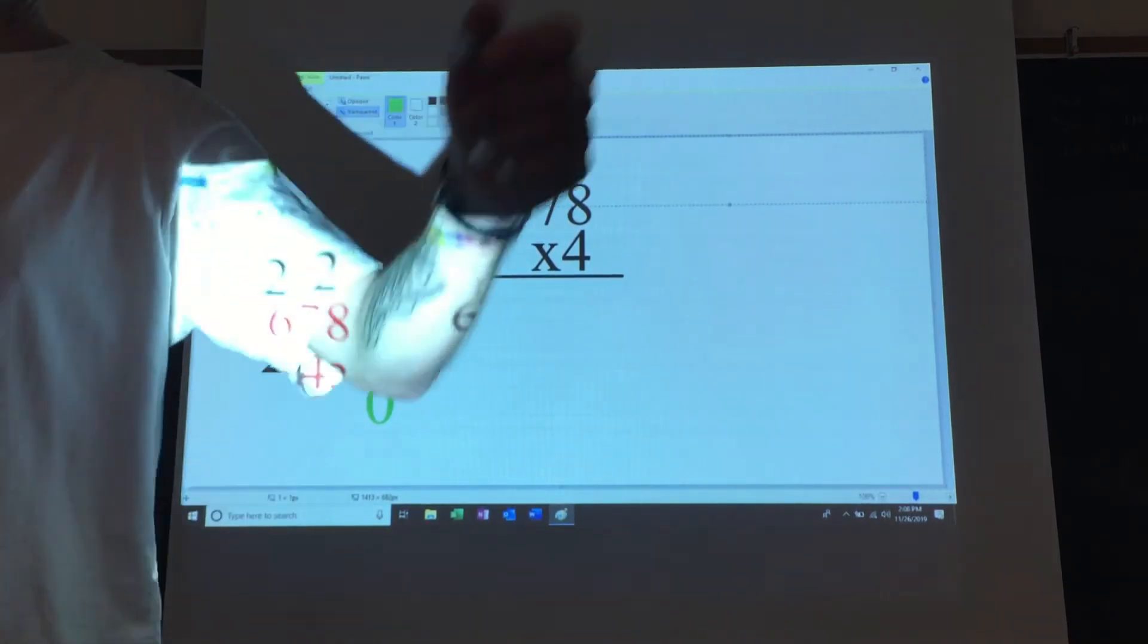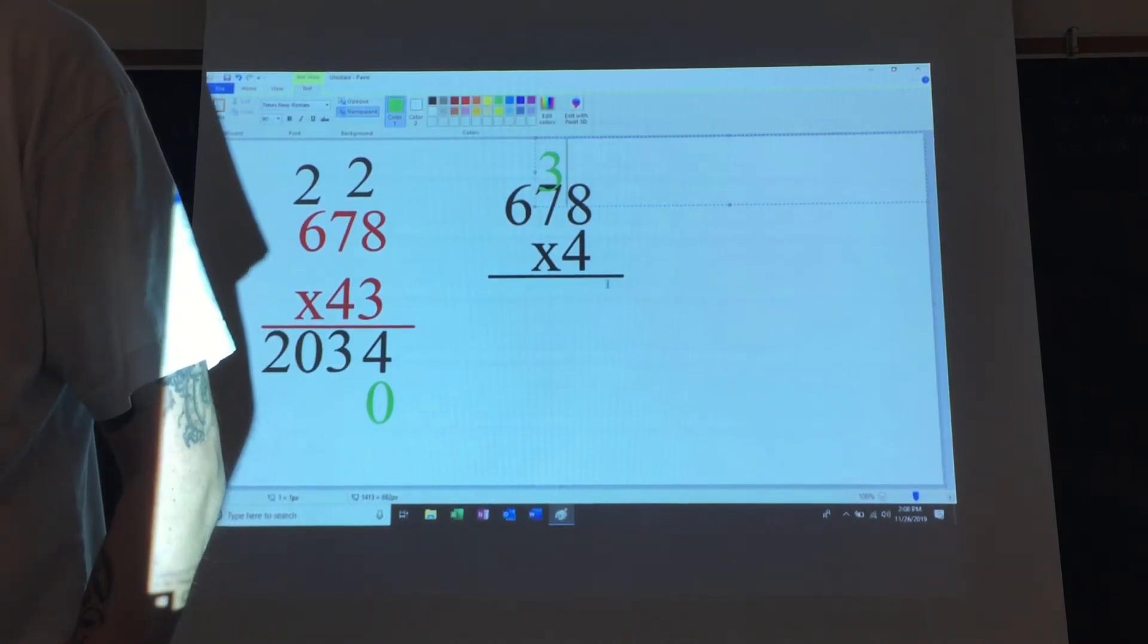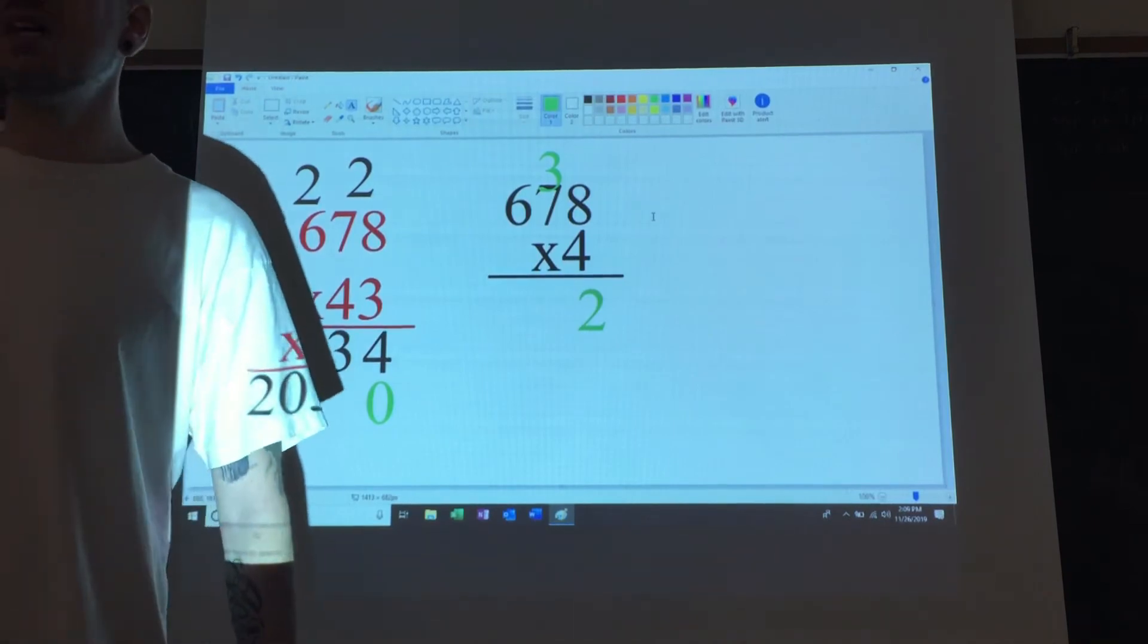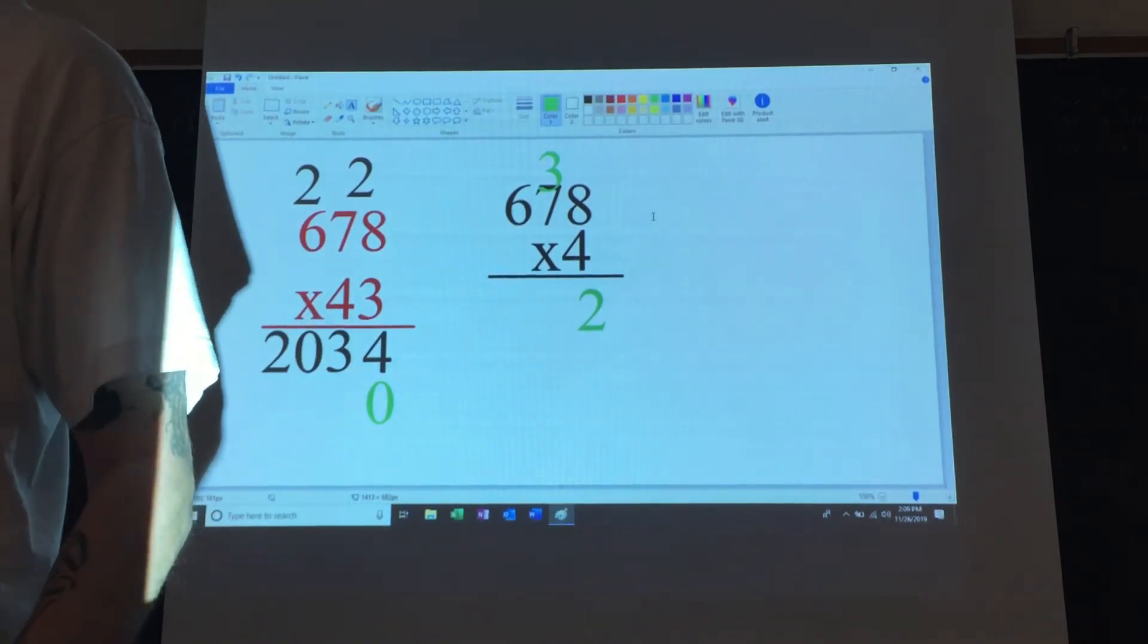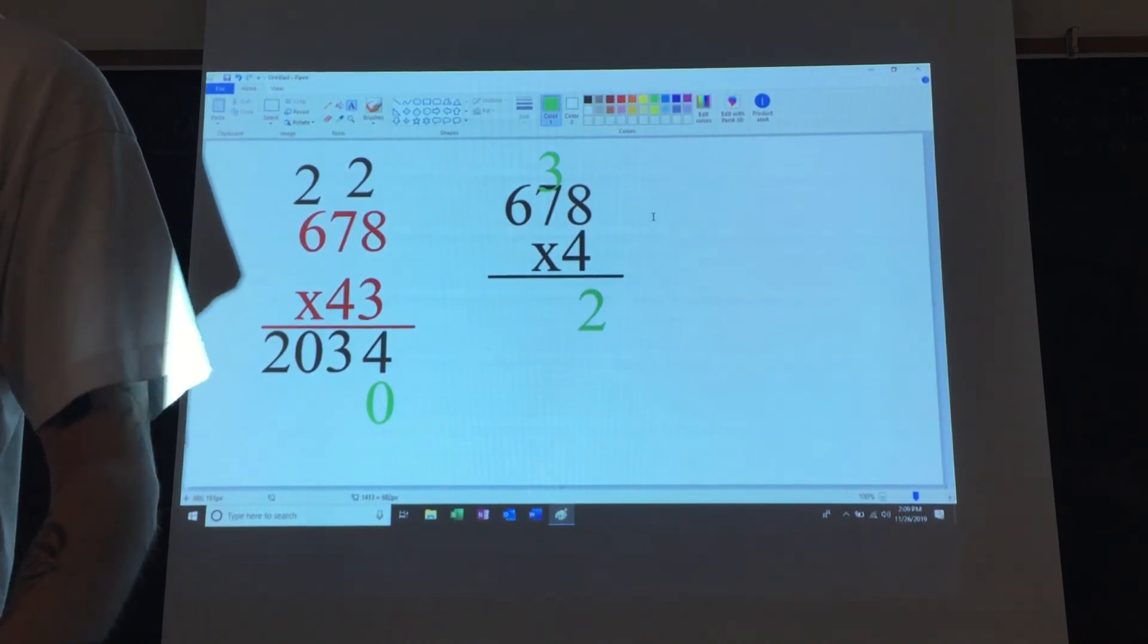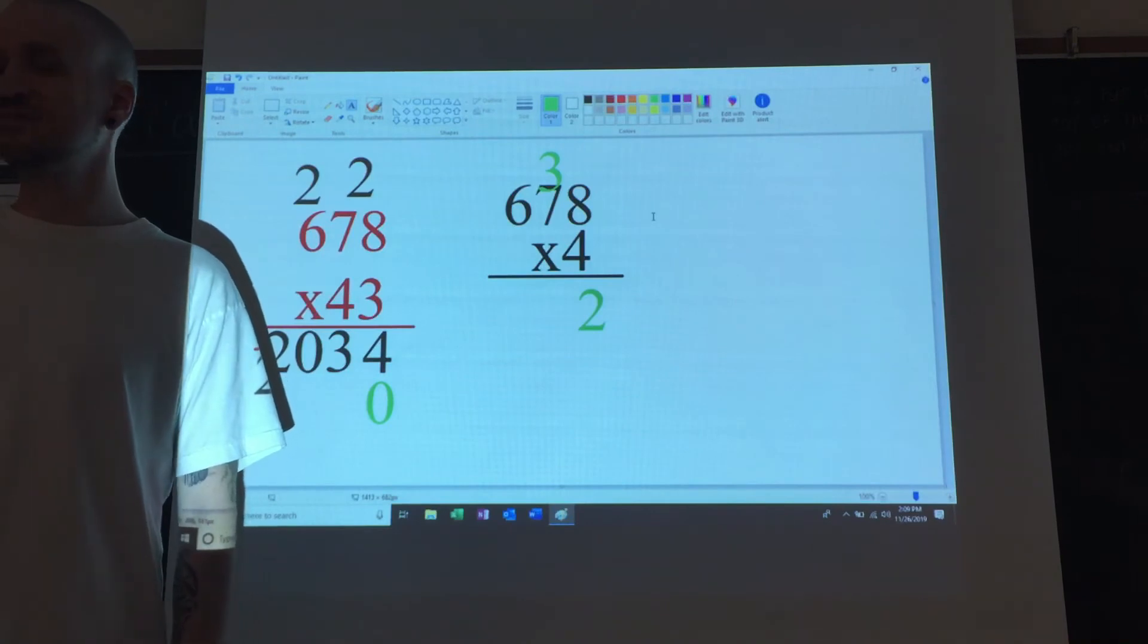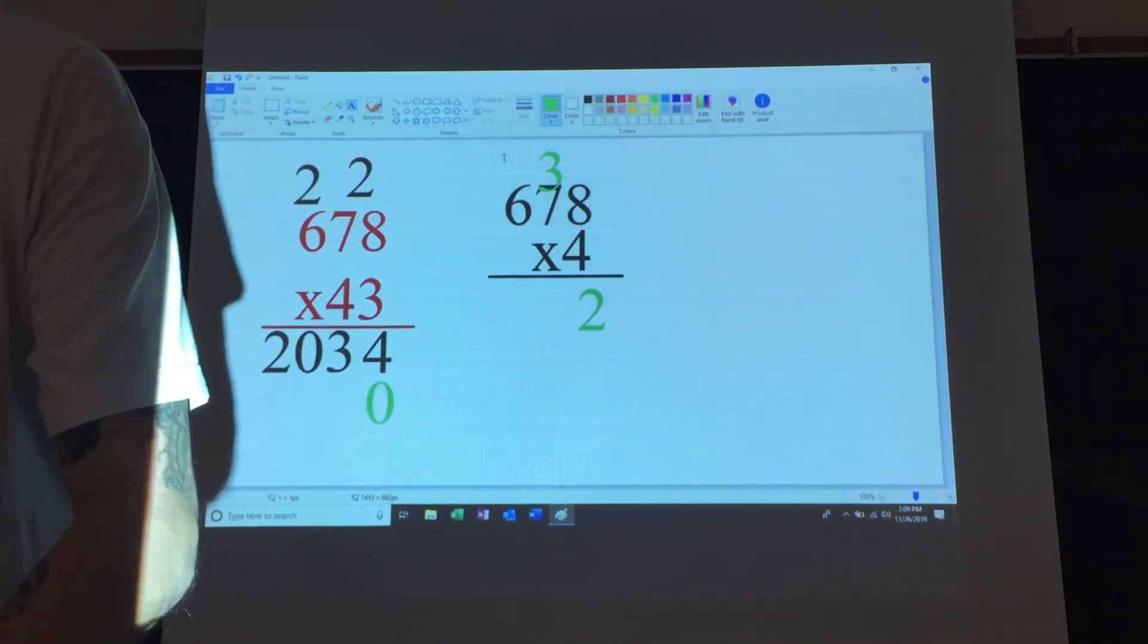Next step: 4 times 8 is what? Yes, 32. So we put the 3 up top and the 2 down here. 4 times 7 is what? Yes, try again. 28 plus the 3 is 31. So you put the 3 up here, the 1 down here.